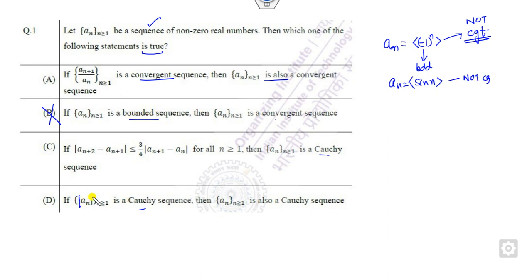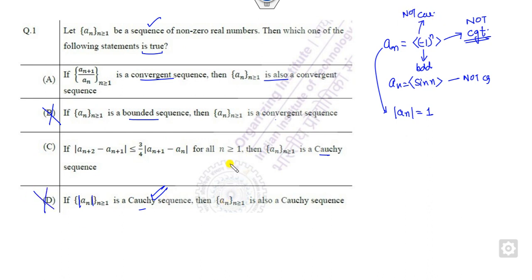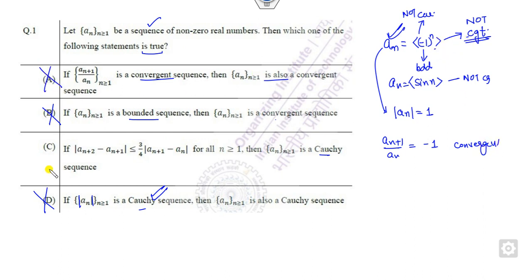Now consider the modulus of (-1)^n, which equals +1 — a constant sequence, so it is a Cauchy sequence. But (-1)^n itself is not a Cauchy sequence, so that option is also cancelled. For the ratio test option, using the same (-1)^n example: the ratio a_{n+1}/a_n = -1, which is convergent, but the sequence itself is not convergent, so that option is cancelled too.